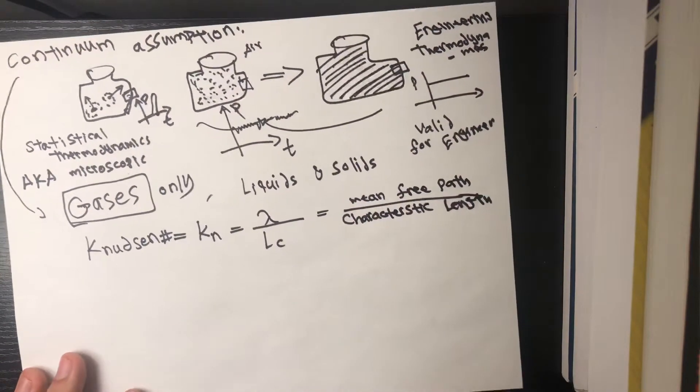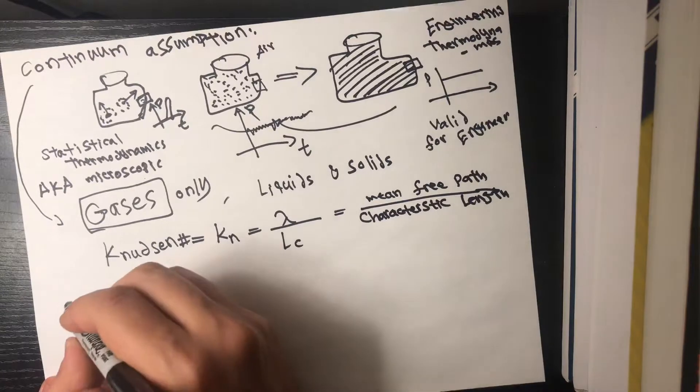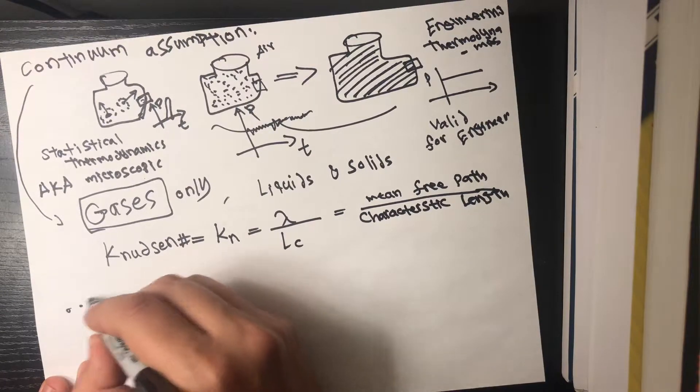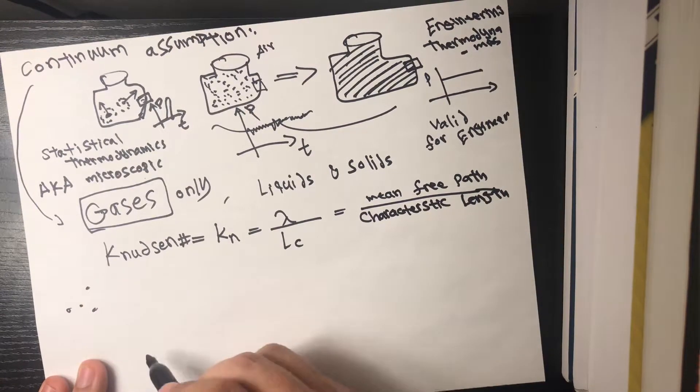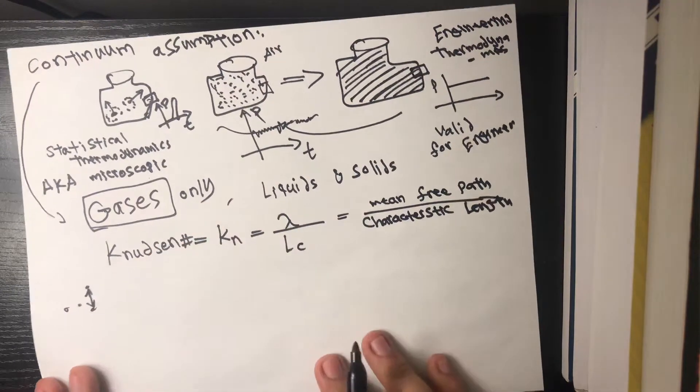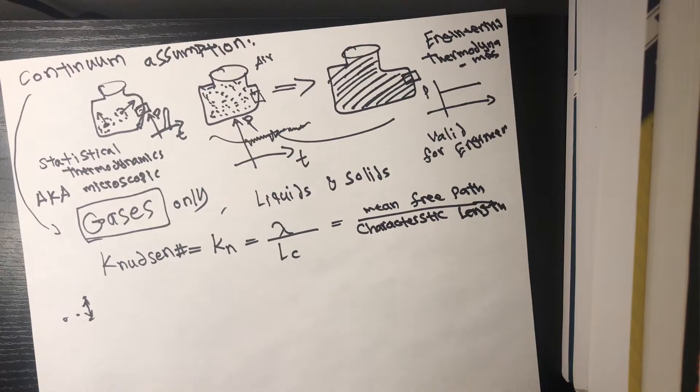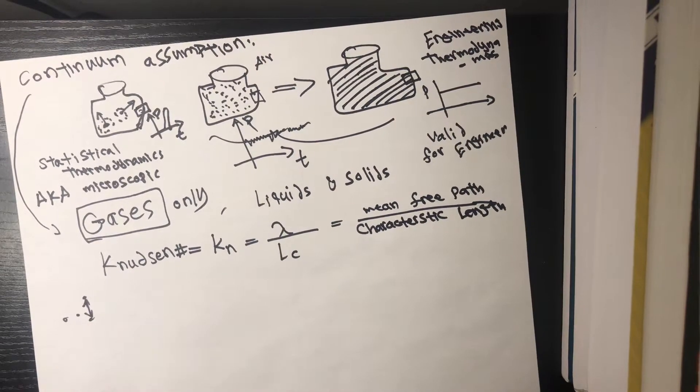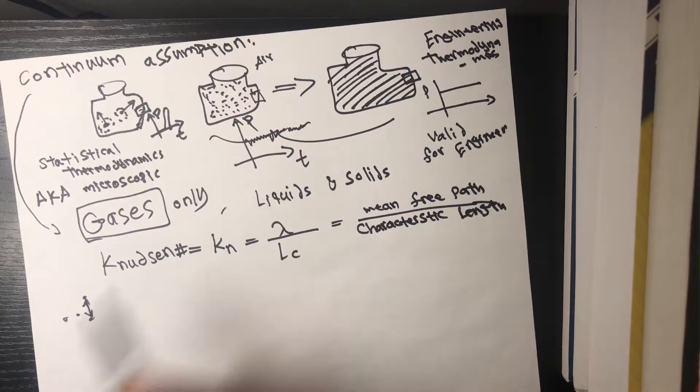So what is the mean free path mean? Well the mean free path, say you have four molecules, it's the average distance between successive collisions, the average distance the molecule will travel before it collides with another molecule. So in this situation here to the right, your mean free path is gonna be on the scale of nanometers, if not smaller.